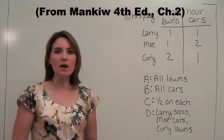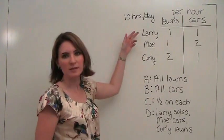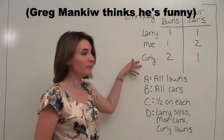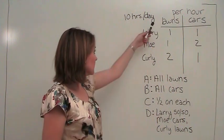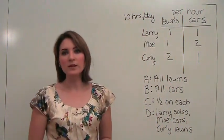Let's assume that in our economy we only have three market participants: Larry, Moe, and Curly. They can only do one of two things - either mow lawns or wash cars.